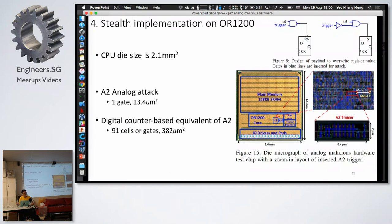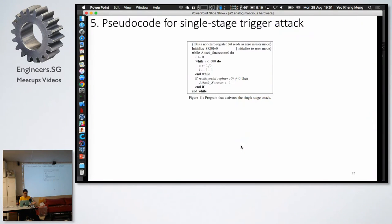That's why I hear the stealth implementation. We see the CPU die size. It's 2.1 mm square. The analog attack only occupies this space. 13.4 micrometer square. You see they zoom in here. Comes here. And they zoom in one time. So it's very difficult to detect this. Compared to let's say if you do a digital based counter one. They actually calculated out. You need 91 gates. So it's 382 micrometer square. One order of magnitude bigger. So that's why it says analog is much more stealthy.